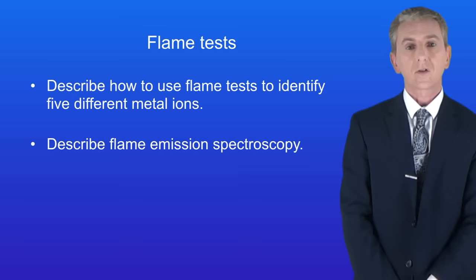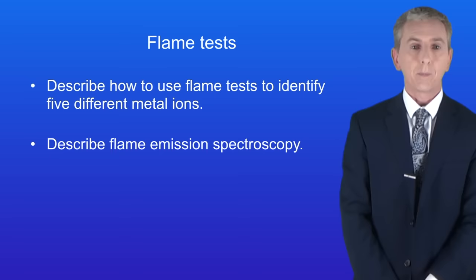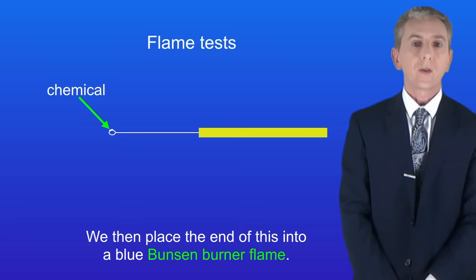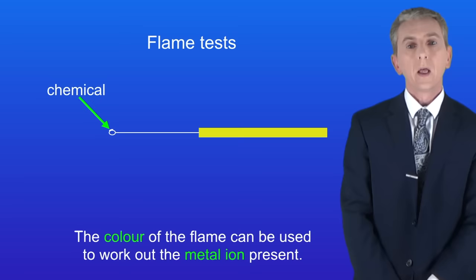Now scientists often need to identify unknown compounds and many of these contain a metal ion. One way of identifying a metal ion is to use a flame test. First we place a small amount of our chemical onto wire mounted in a handle. We then place the end of this into a blue Bunsen burner flame. The colour of the flame can be used to work out the metal ion present.